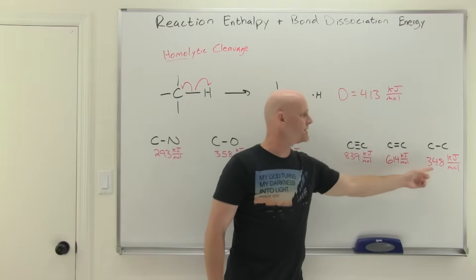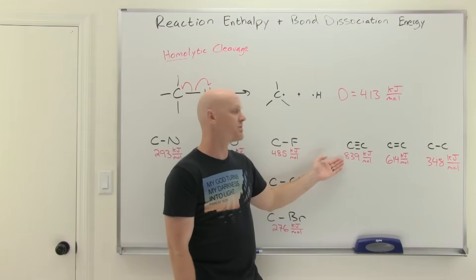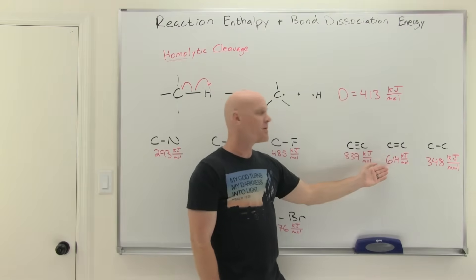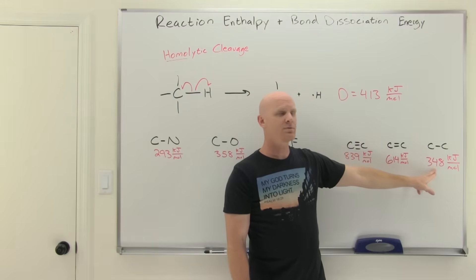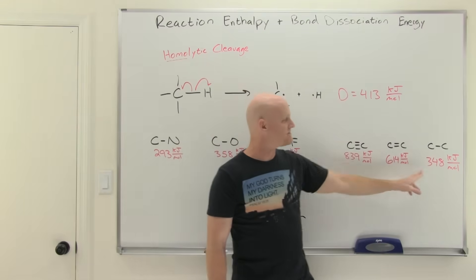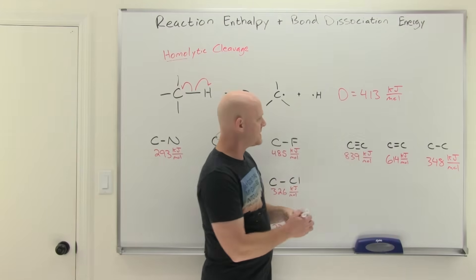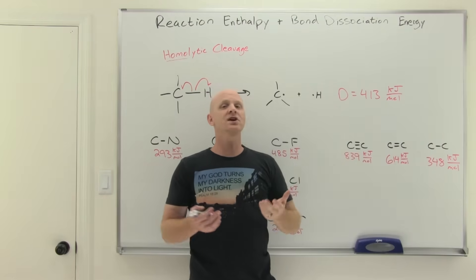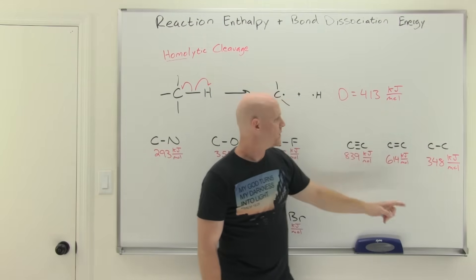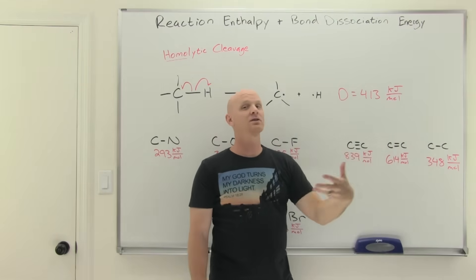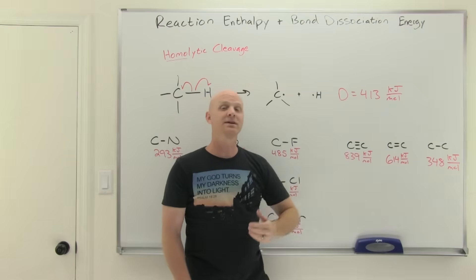The other thing to look at is the difference between a single bond, a double bond, and a triple bond. As you might suspect, the triple bond is stronger, so it takes more energy to break a carbon-carbon triple bond than a double bond, and more energy to break the double bond than a single bond. One thing you might notice: a carbon-carbon single bond is 348 kJ/mol, but the triple bond is not quite triple that value — triple would be just over 1,000 kJ/mol, but we're only at 839 kJ/mol. That's because the triple bond consists of one sigma bond and two pi bonds, and there's not as much energy stored in a pi bond as in a sigma bond. So breaking a double bond isn't double the sigma because the pi bond is easier to break, and same for the triple bond — you're breaking two pi bonds and one sigma, so it's not triple the sigma value.